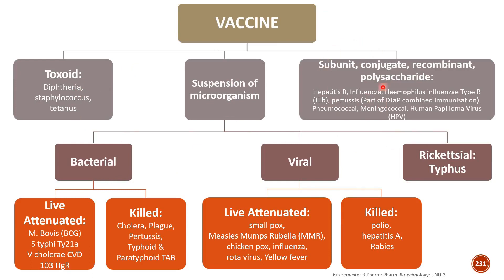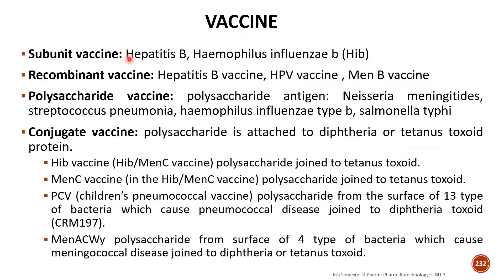There is another, newer classification that adds subunit, conjugate, recombinant, and polysaccharide vaccines. Subunit vaccines include hepatitis B and Haemophilus influenzae type B. Recombinant vaccines include hepatitis B vaccine, human papillomavirus vaccine, and meningitis B vaccine. These are prepared using genetic engineering and recombinant DNA technology.